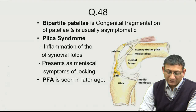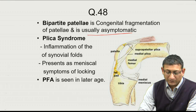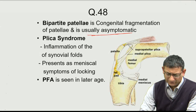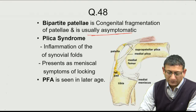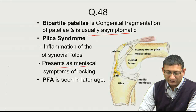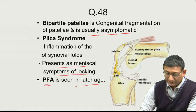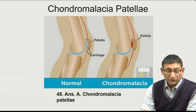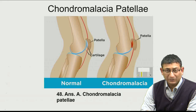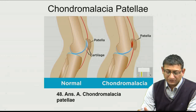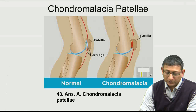Bipartite patella is a congenital fragmentation of the patella and is usually asymptomatic — it doesn't lead to pain in most cases. Plica syndrome involves inflammation of the synovial folds and presents with meniscal symptoms of locking. Patellofemoral arthritis is seen in elderly patients. Chondromalacia patellae is the most common cause of anterior knee pain in youngsters or teenagers.